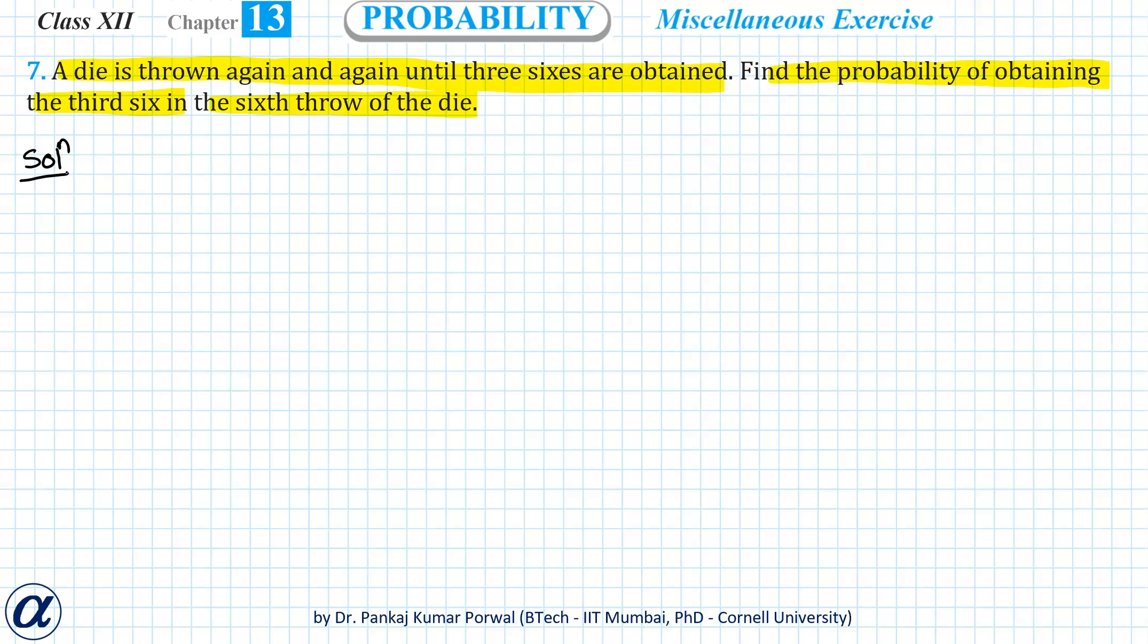This is also a binomial probability question, but there is a twist. We are throwing a die again and again, but in this case we want to get three sixes with the third six in the sixth throw of the die.